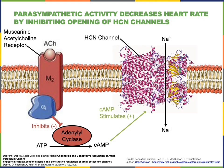Here we see another mechanism leading to a decrease in heart rate following activation of the muscarinic acetylcholine receptors on the auto-rhythmic cells. The muscarinic acetylcholine receptor activates the alpha G protein subunit, which inhibits the enzyme adenylyl cyclase, leading to decreased cyclic AMP. With less cyclic AMP available to bind to the HCN channel, there is decreased sodium influx during the pacemaker potential. Therefore, it takes longer to reach threshold and the heart rate decreases.